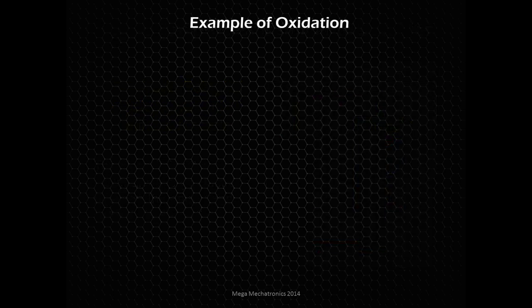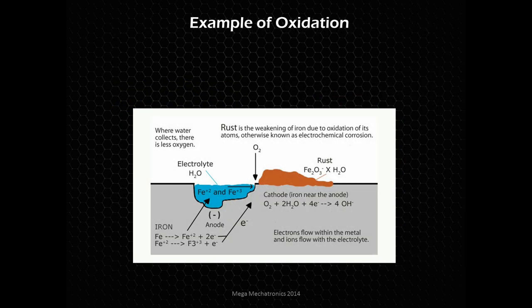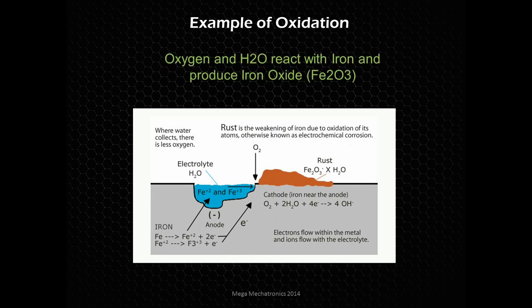An example of an oxidation process with iron: oxygen in the atmosphere reacts with water — humidity and things like that, since there's water in the air as well. Those two things react with the iron and produce iron oxide. You can see how that degrades the base metal and turns it into that brown rust we're used to seeing.